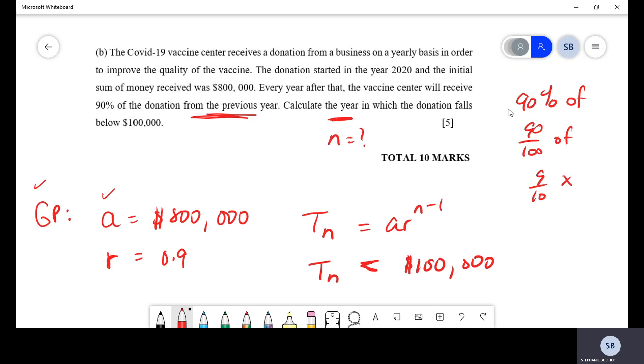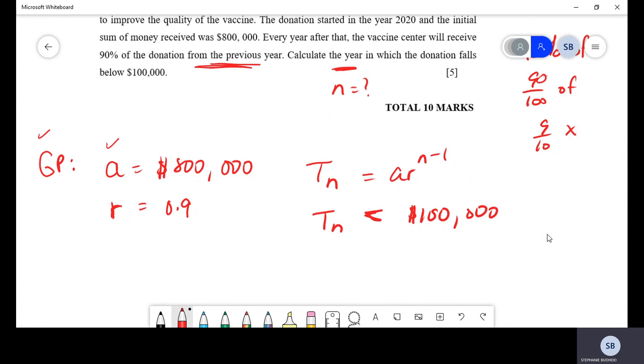That is essentially what they want to find. In which year does the donation fall below $100,000? When is the term or the value less than $100,000? So, we can do a quick setup for this question. And the setup will look like this. Well, first of all, the term is given by AR to the N-1. And we have to find N such that that value is actually less than $100,000.